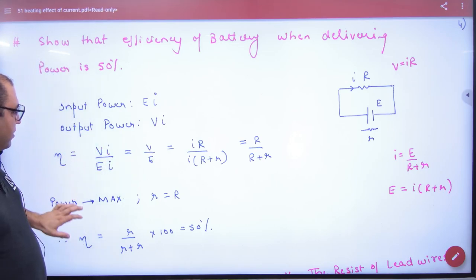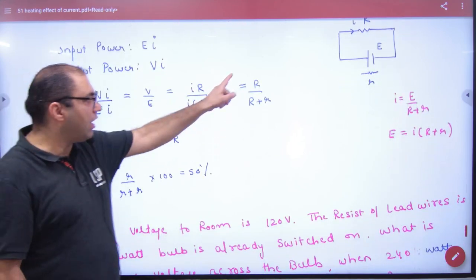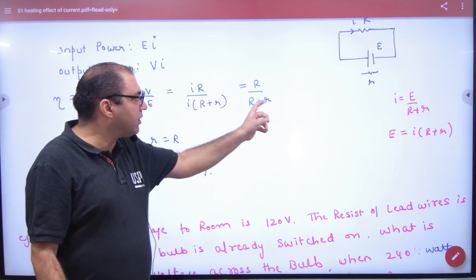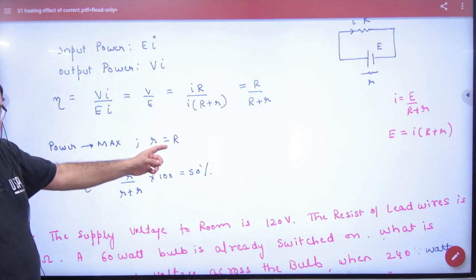Because the efficiency formula that I have written for you, it was R upon R plus r. And when efficiency will be maximum when R is equal to r, then power is maximum.